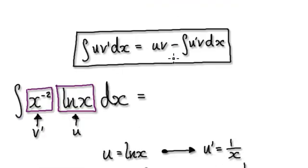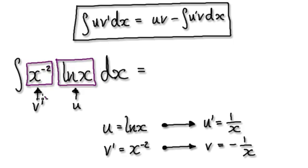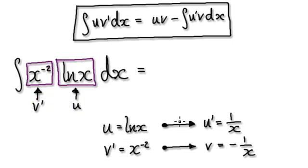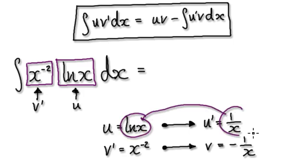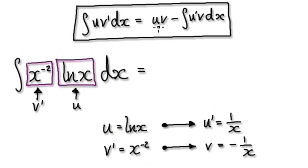Visualize that thing as this — one block multiplied by another block. Let this be v prime, let this be u. So if u equals this, then u prime equals this. If v prime equals this, then v would be this.